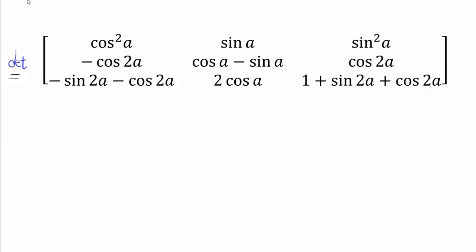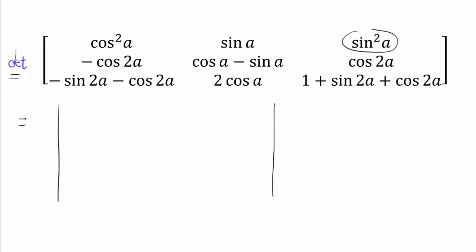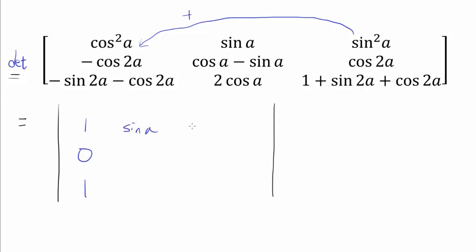So what can we do to simplify this matrix? One thing we notice is that sin²(a) + cos²(a) = 1, and cos(2a) minus cos(2a) is 0. We have +sin(2a) + cos(2a) on the right side, while we have −sin(2a) − cos(2a) on the left side. So the problem is really wanting us to add the third column to the first column. When we add the third column to the first column, we get 1, 0, 1 in the first column, keeping the rest unchanged.